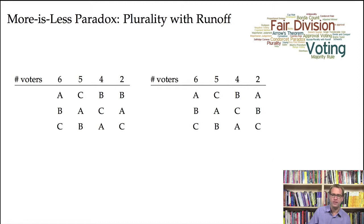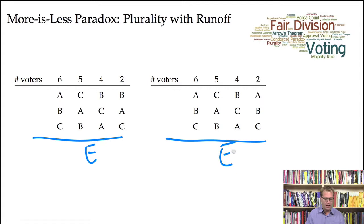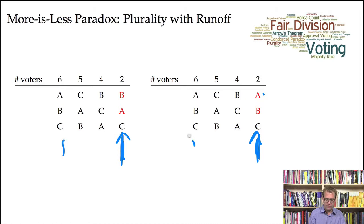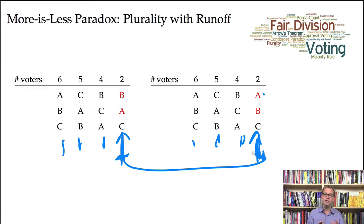Here are two election scenarios, E and E prime. The only difference between these two scenarios is that in a group of two voters, they move candidate A from second place to first place. The other groups of voters keep their rankings the same. It's only the last group of voters whose rankings change — they move candidate A from second place to first place, which naturally means candidate B moves from first to second. The important point is candidate A moves up in the rankings.